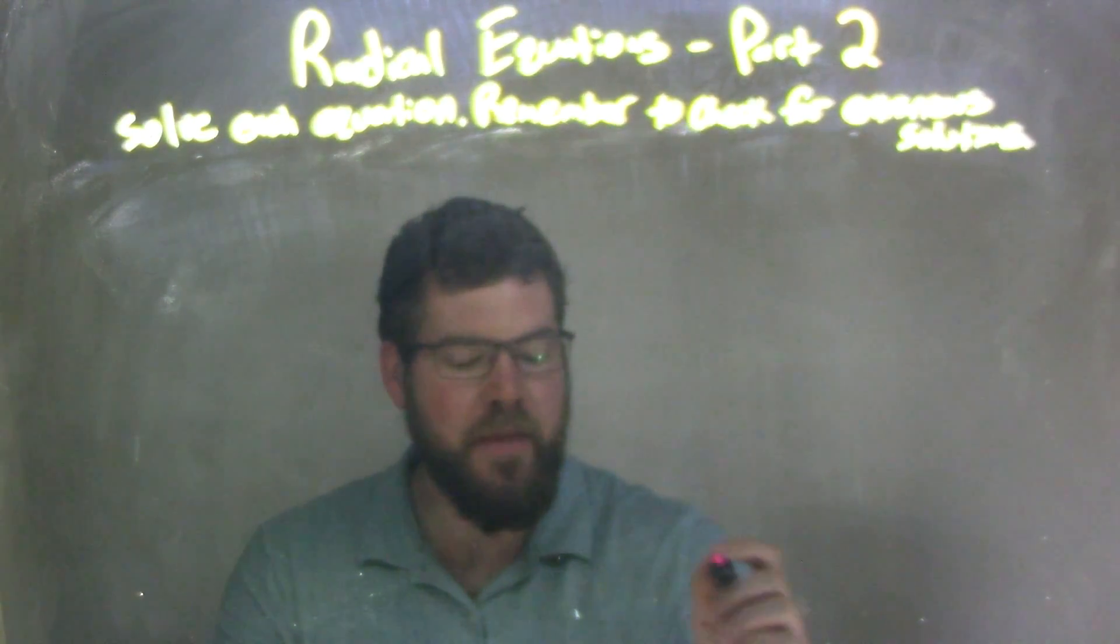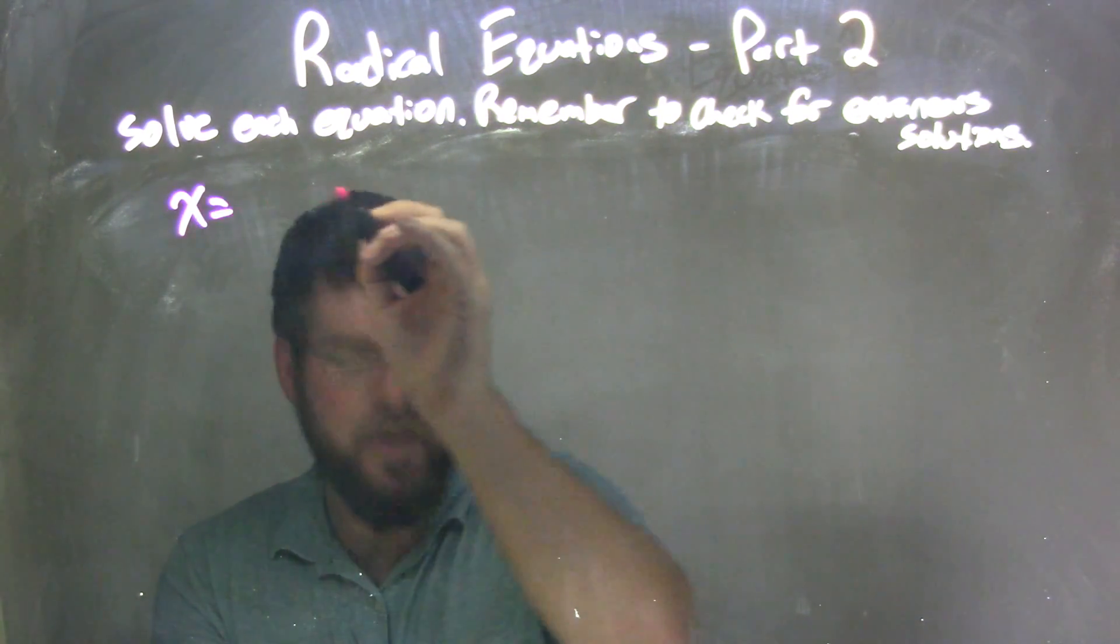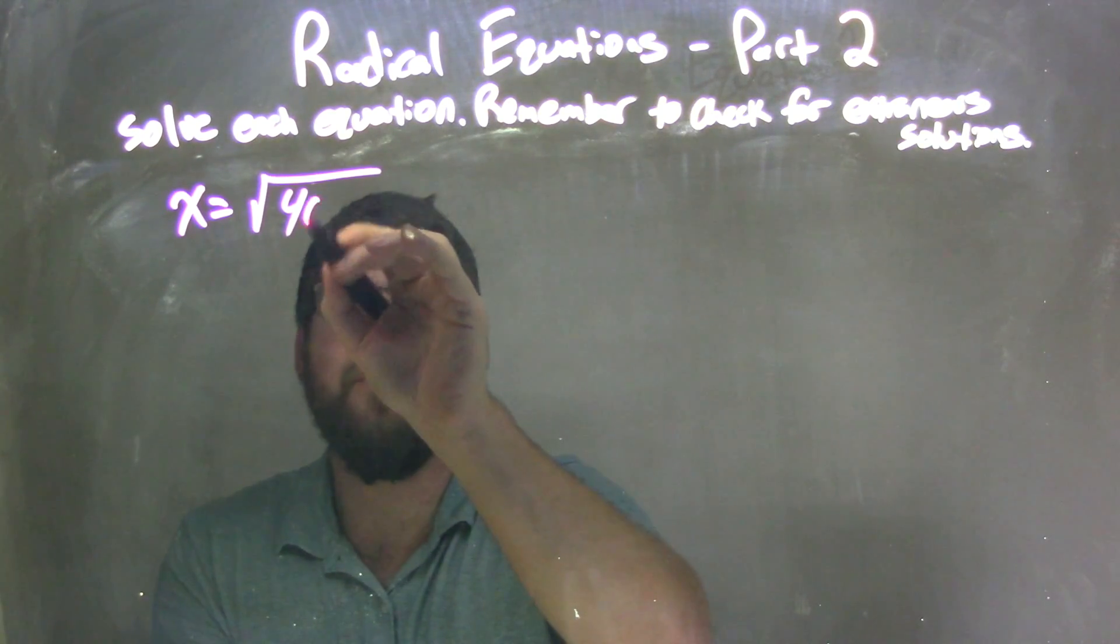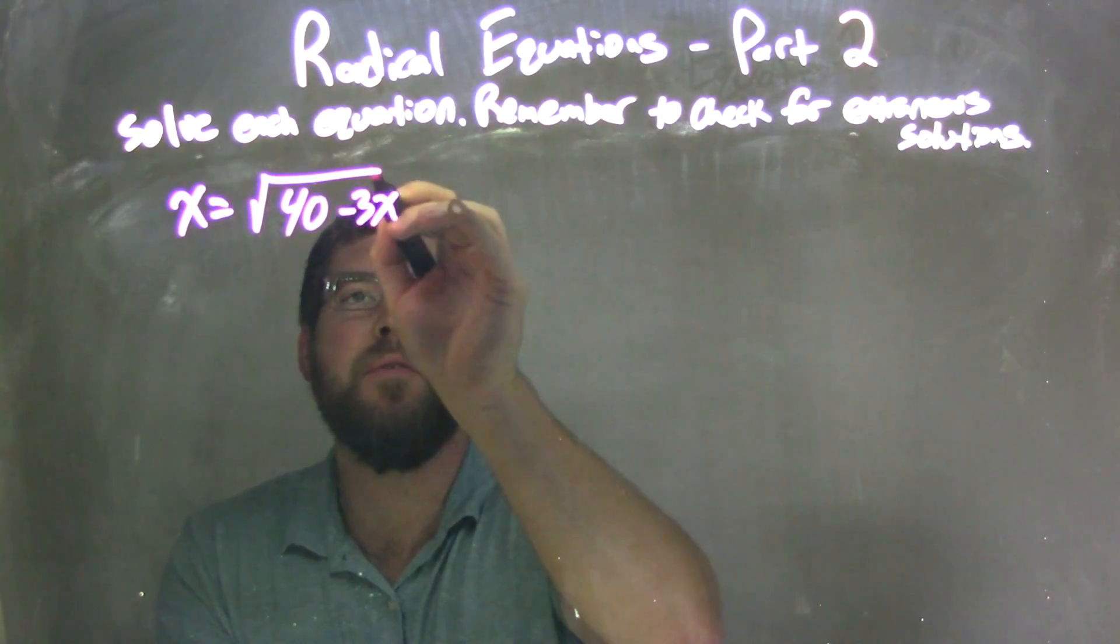So, if I was given this equation: x equals the square root of 40 minus 3x.